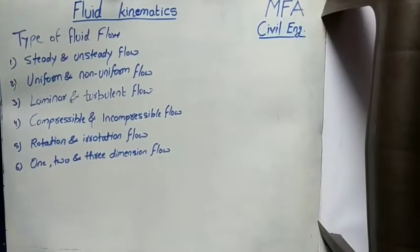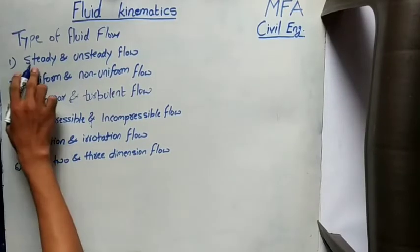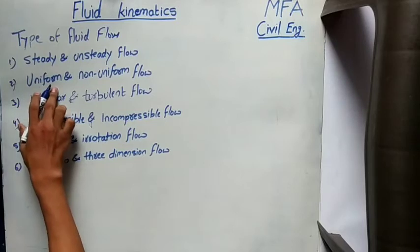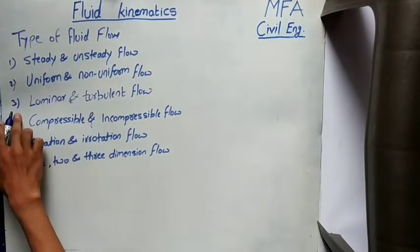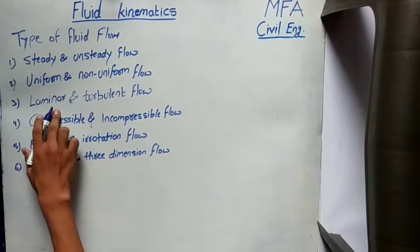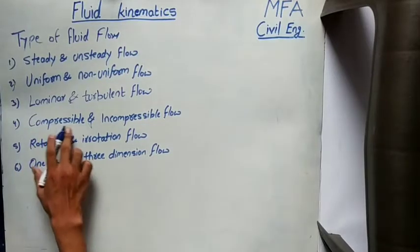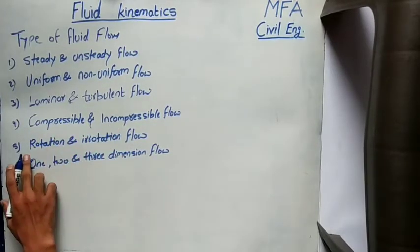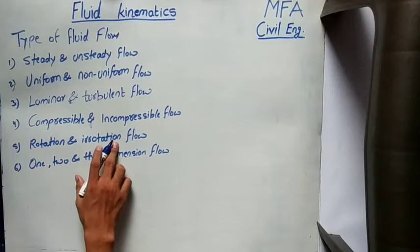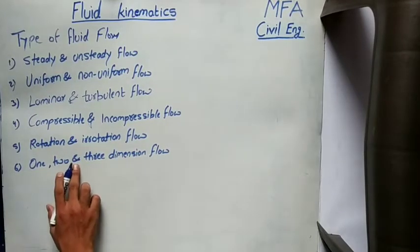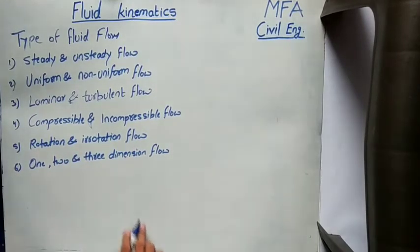Let's see the different types of fluid flow. Fluid flow is classified into various types: first is steady and unsteady flow; second is uniform and non-uniform flow; third is laminar and turbulent flow; fourth is compressible and incompressible flow; fifth is rotational and irrotational flow; and sixth is one-, two-, and three-dimensional flow.